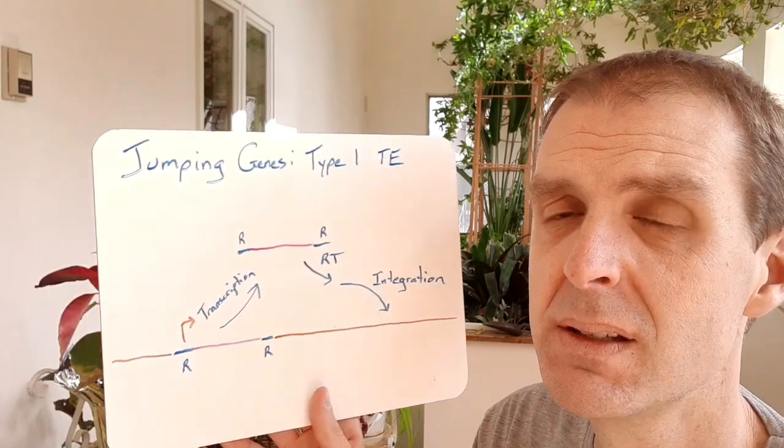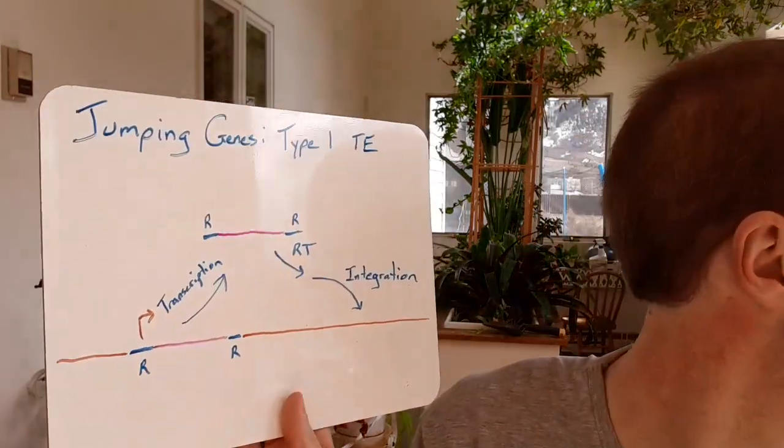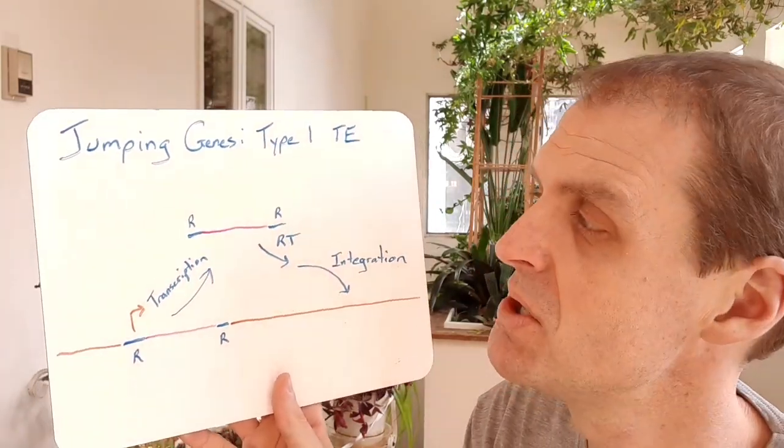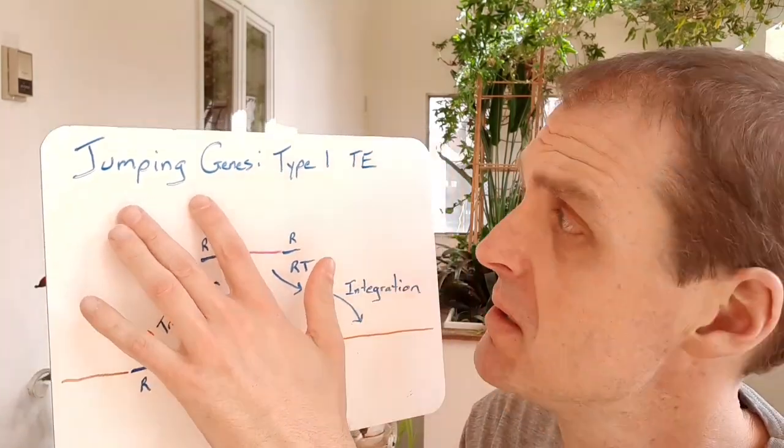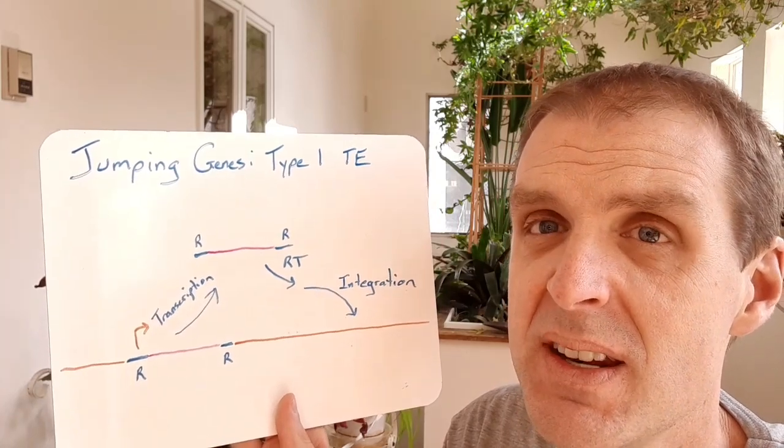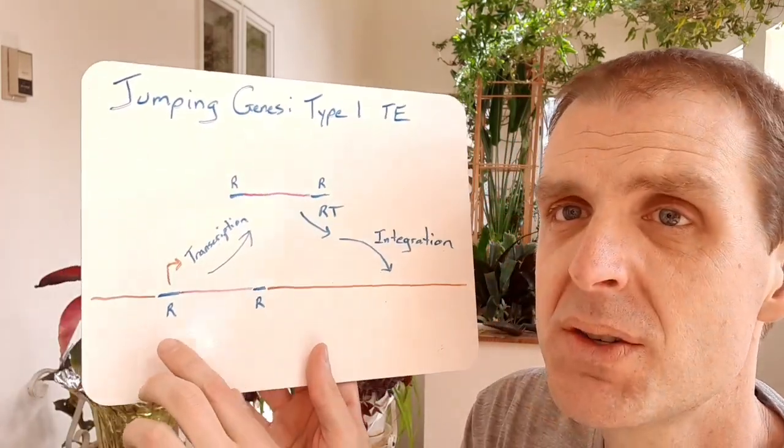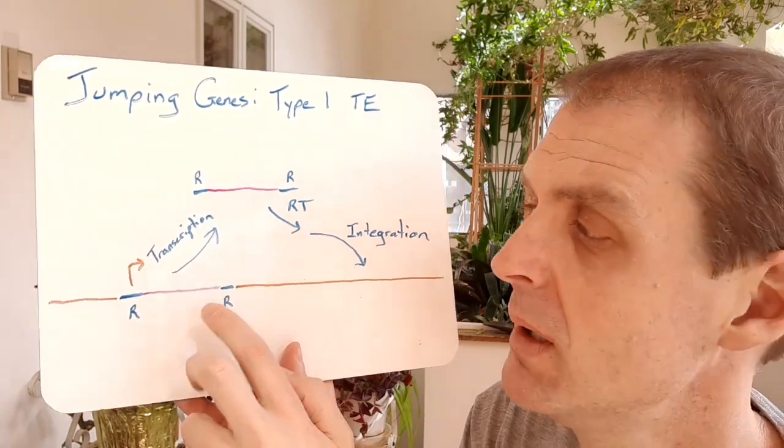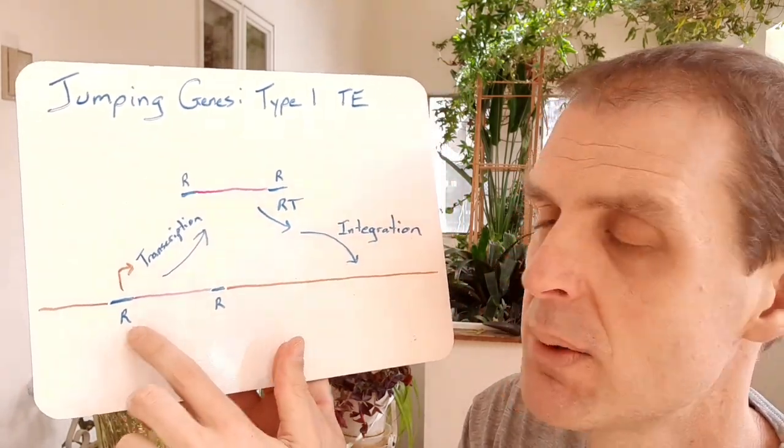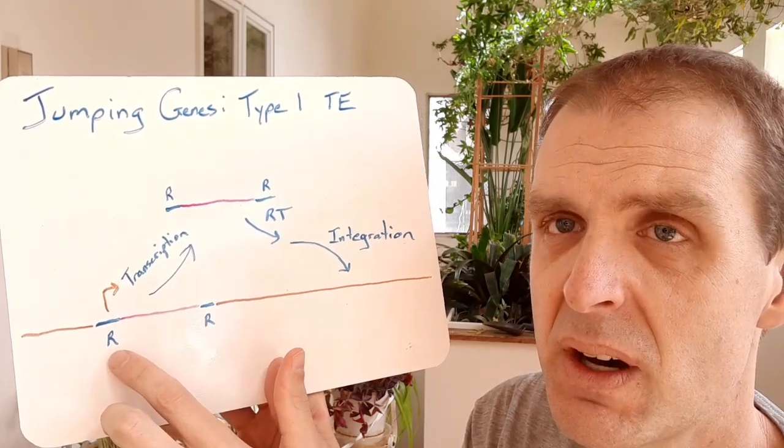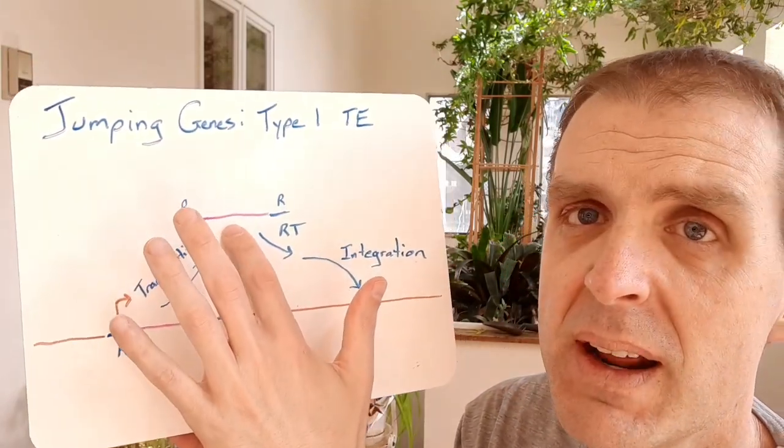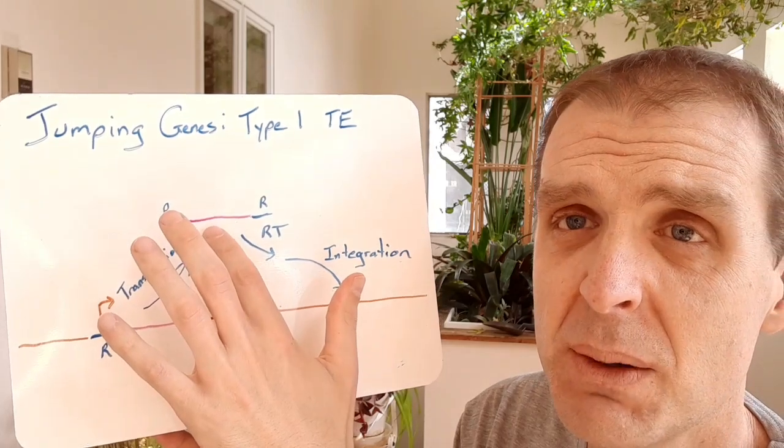Sometimes these selfish genetic elements that take up a big part of your genome are called jumping genes. We're going to talk about Type 1 TE, so TE is transposable element. Somewhere within your genome, this is a human genome again, you've got a transposable element. The transposable element has some repeated sequences at each end of it, that's what the R stands for here, and you can get transcription of that transposable element so that you have an RNA.